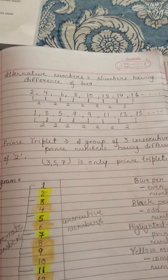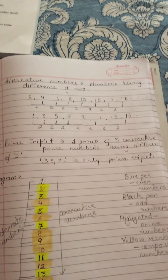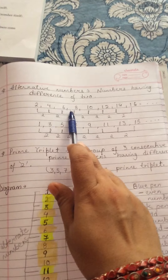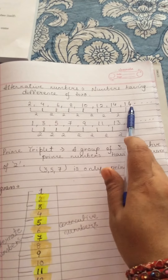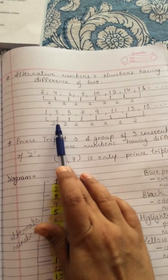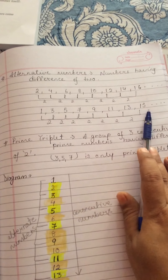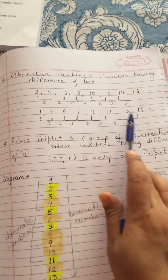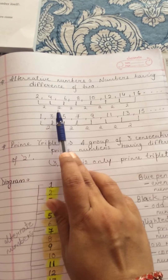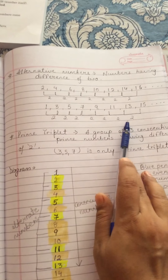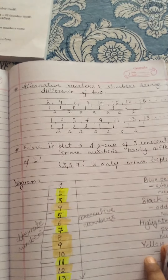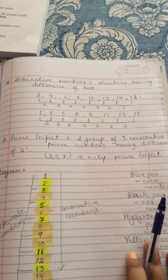Next, alternative numbers: numbers having a difference of 2. 'Alternate' means skip one and take the next. Examples: 2, 4, 6, 8, 10, 12, 14, 16 — and also 1, 3, 5, 7, 9, 11, 13, 15. All are alternative numbers. The difference between all alternative numbers is 2.